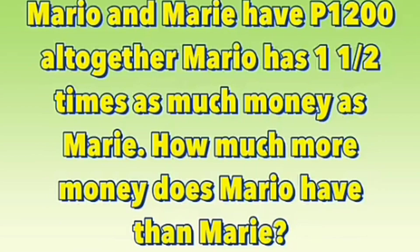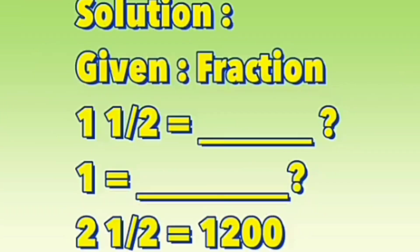The next problem is number nine. Mario and Marie have 1200 pieces altogether. Mario has one and a half times as much money as Marie. How much more money does Mario have than Marie? Our solution.